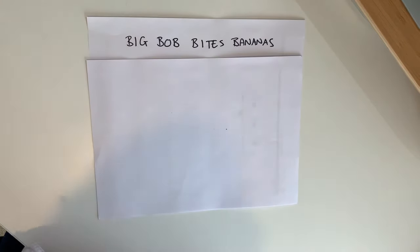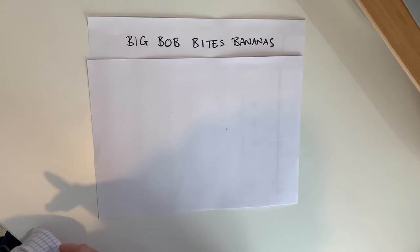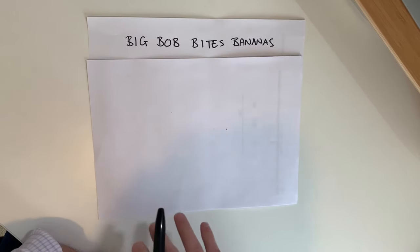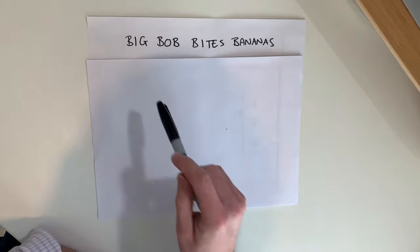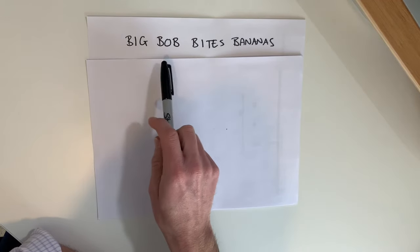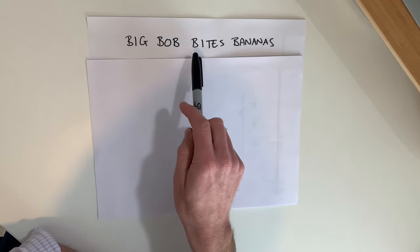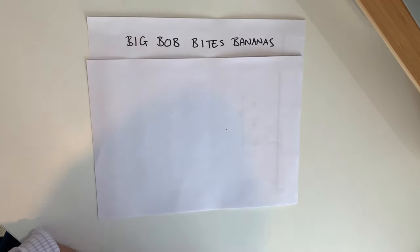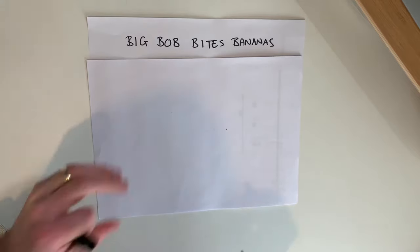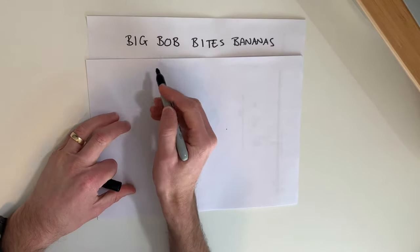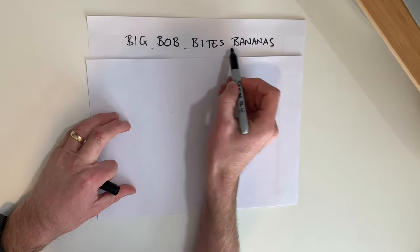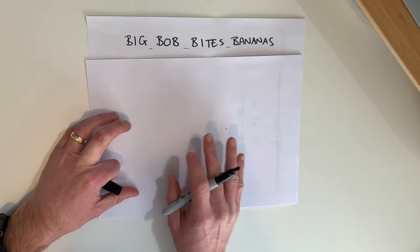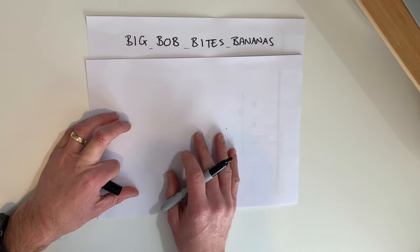Welcome to this video where I'm going to give you an example of how we can use Huffman encoding to compress this string of text: 'Big Bob Bites Bananas.' Before we begin, we should be aware that between each word there is a space, so we're going to have to encode that as well.